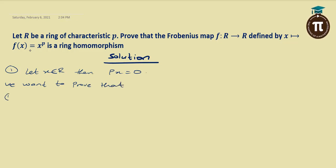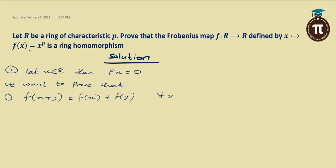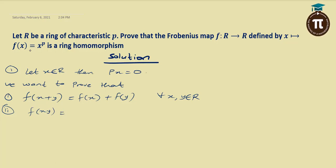What do we want to prove? Number one: if you take F of X plus Y, it will be equal to F of X plus F of Y — that is what we want to prove for any two elements you pick from the ring. Then number two, since it's a ring with two binary operations, we want to also prove that F of XY is equal to F of X times F of Y. Once we are able to prove these two things for all X and Y in R, then we are through with the question — that means F is a ring homomorphism.